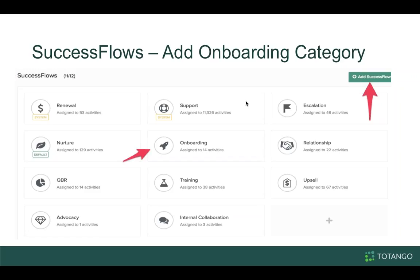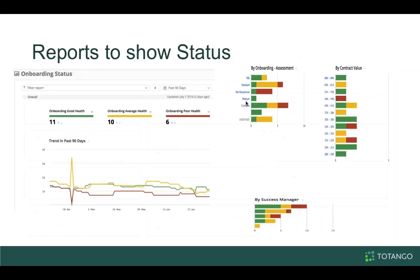That way, when you record something into Totango or create a task, you can designate it to the onboarding category. You can do the same when you build your success plays and campaigns, so you can easily identify what type of engagements your team has with the customer — and potentially alert internally if an onboarding customer hasn't had an engagement or conversation in the initial phases of onboarding, which could be an issue.